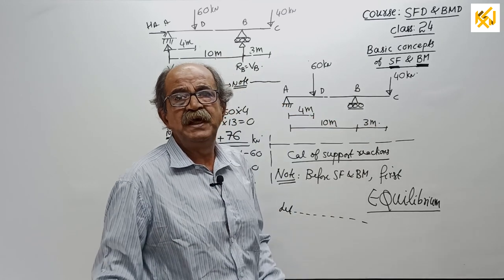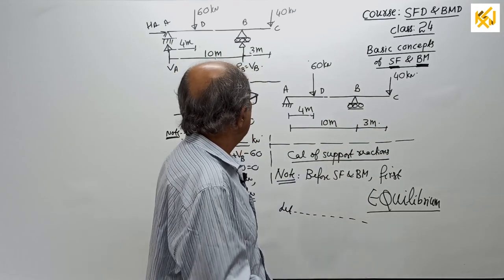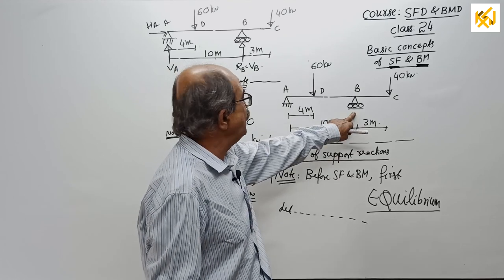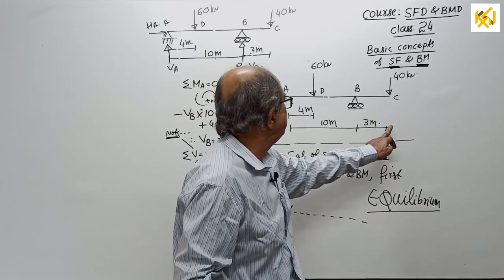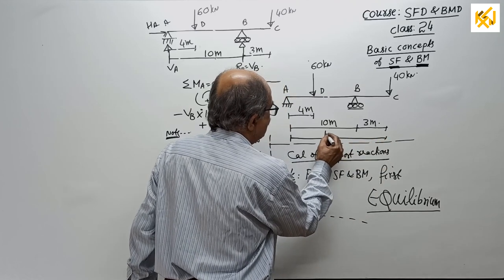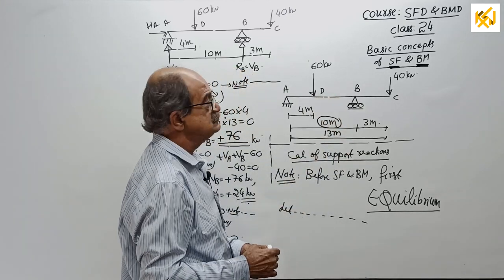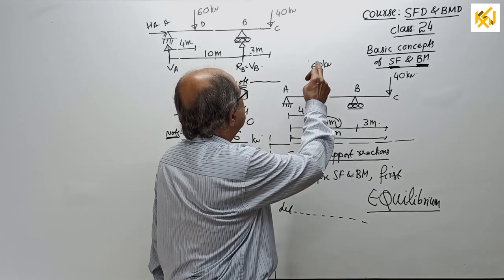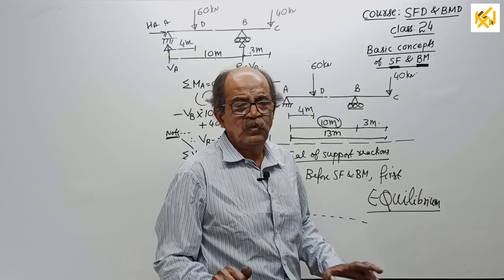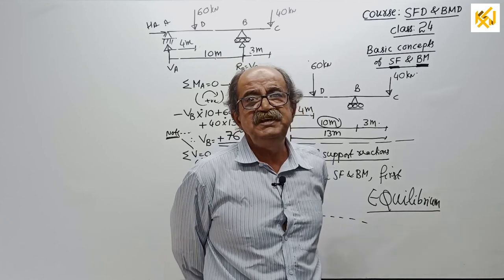Consider a beam of length 13 meters. It is hinged at its left end and placed on a horizontal roller at 3 meters from the right end, making the span 10 meters. The beam supports two point loads: 60 kN at 4 meters from the left end and 40 kN at the right extreme end.